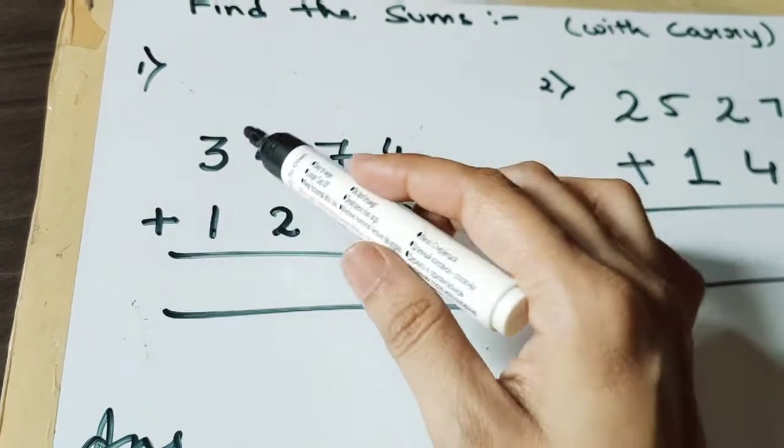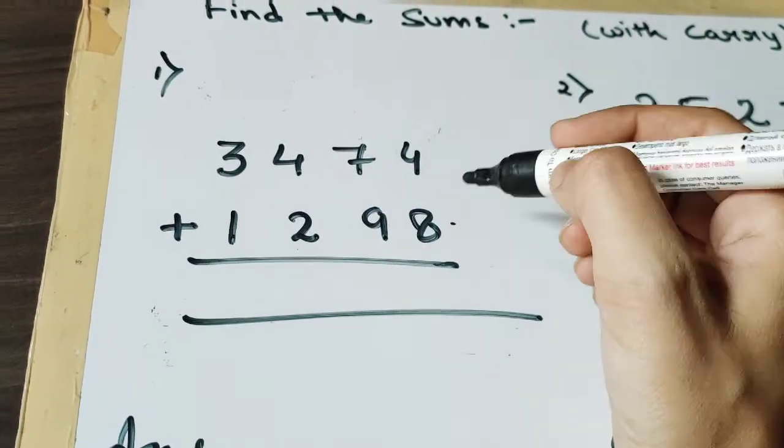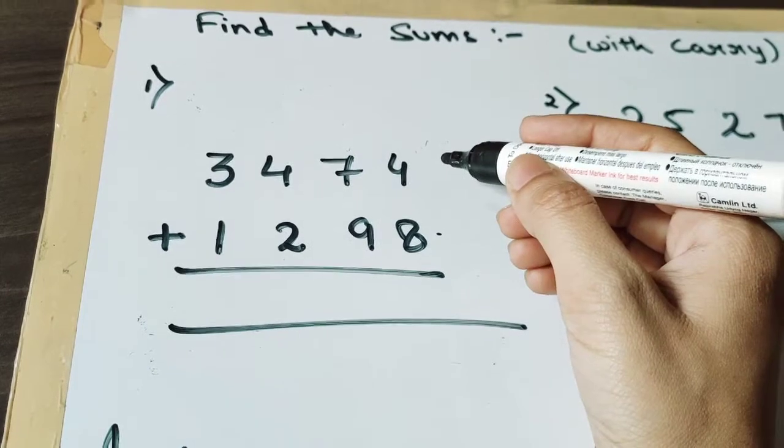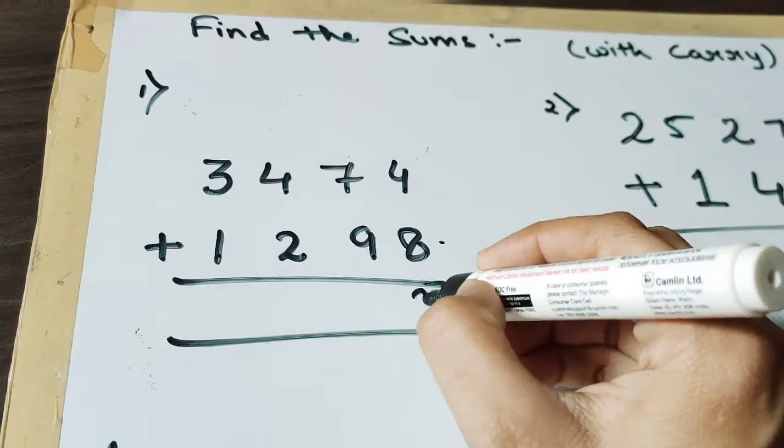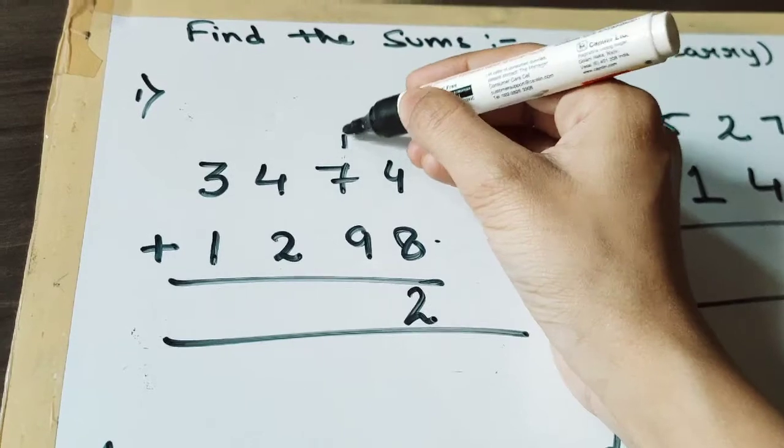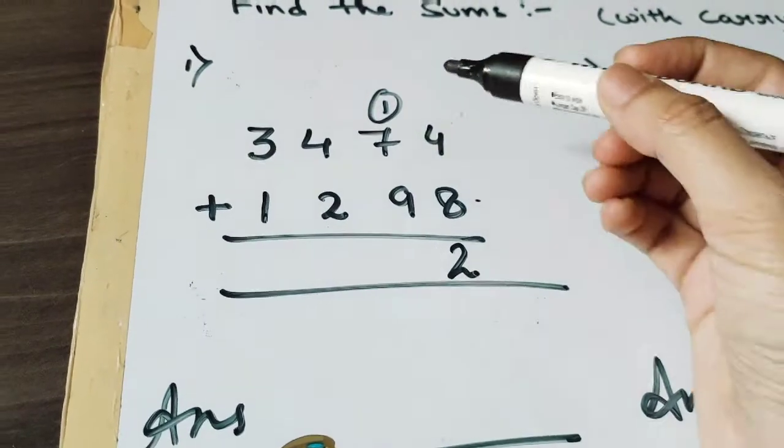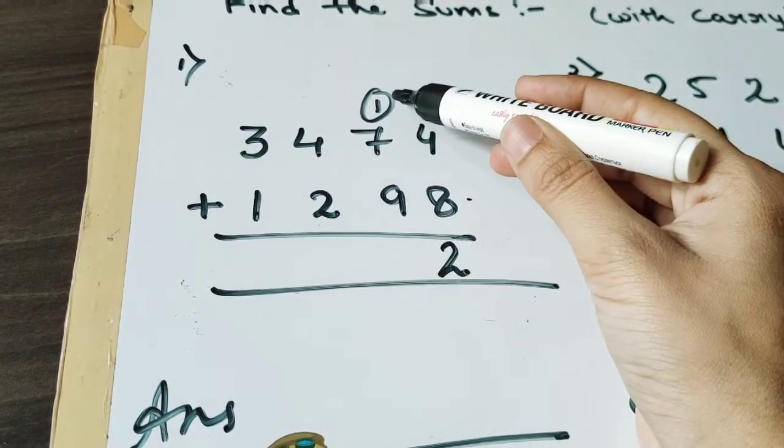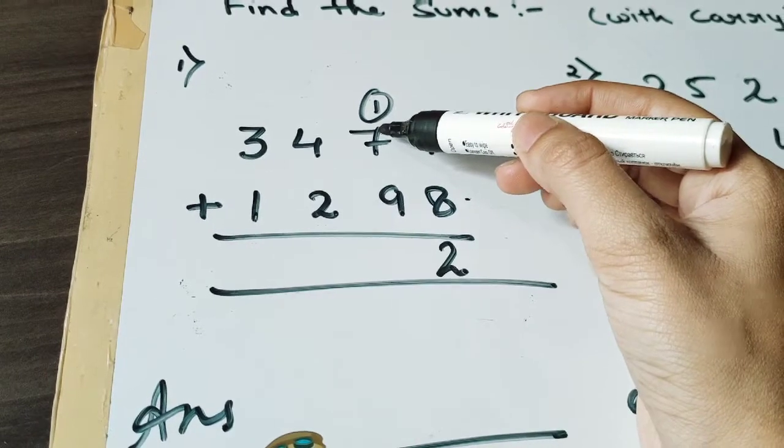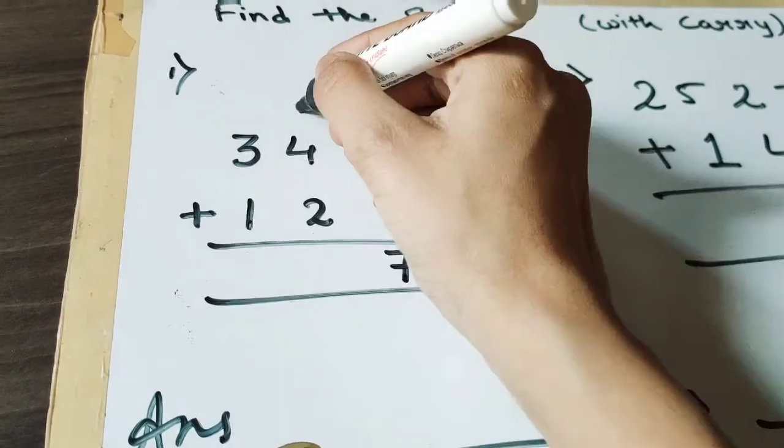tens place together, hundreds place together, and thousands place together. Now 8 plus 4 is 12, so we will write 2 here and 1 will be the carry. Now add: 9 plus 1 is 10, 10 plus 7 is 17. Carry 1.